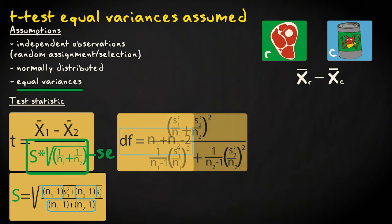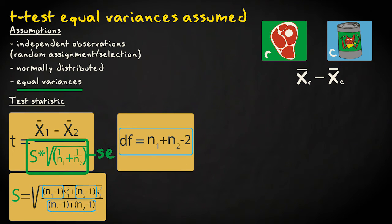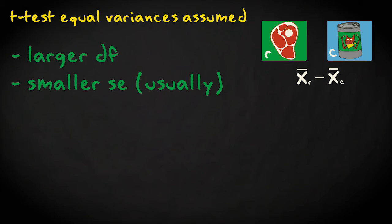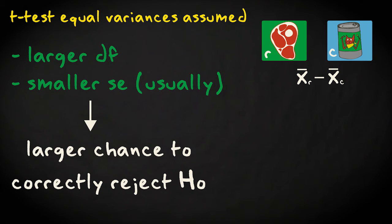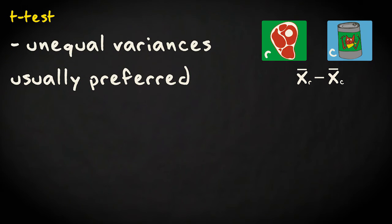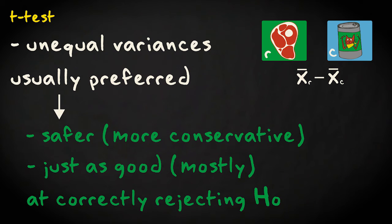Fortunately, the calculation of the degrees of freedom is now much simpler. They're equal to the total sample size minus two. The additional assumption of equal population variances can be useful because it results in larger degrees of freedom and possibly a smaller standard error, which results in a slightly larger chance of rejecting the null hypothesis. However, most people would recommend using the unequal variances version to be on the safe side and because in almost all cases, it's just as good.